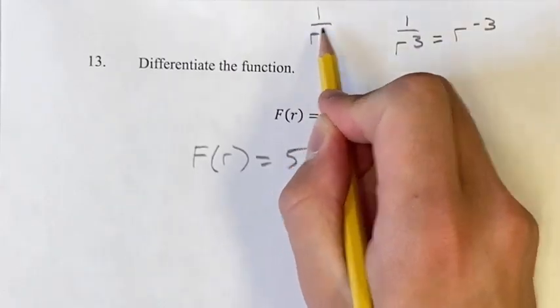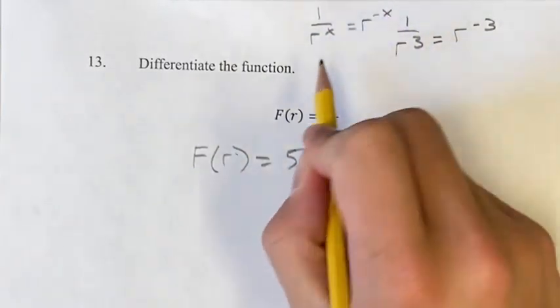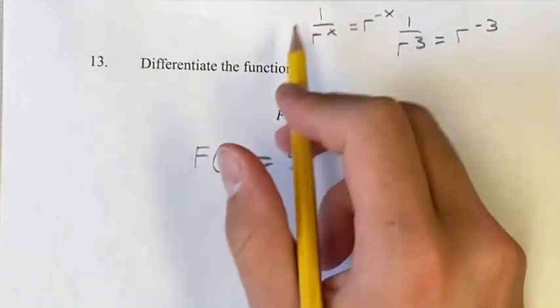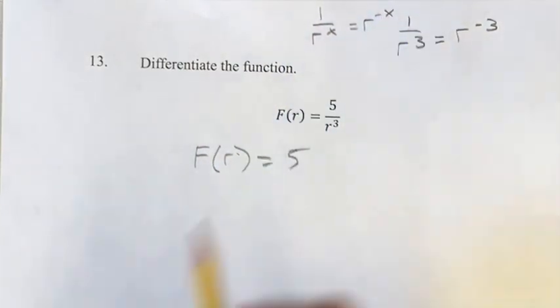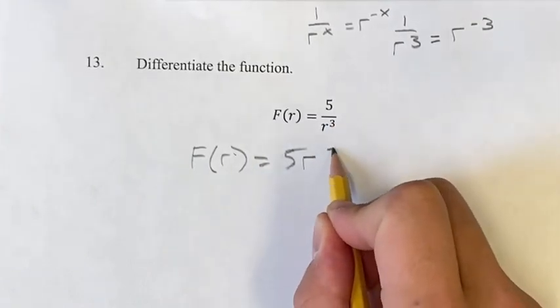this is r to the negative 3. This is true for any value: 1 over r to the x is r to the negative x. When you bring it to the front, when you bring it to the numerator, multiply the exponent by negative 1. So this is going to be r to the negative 3.